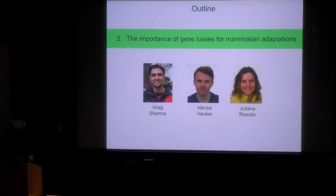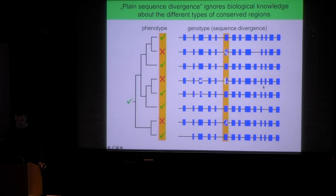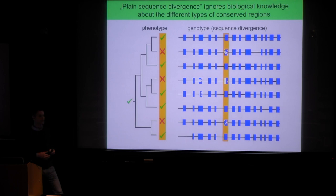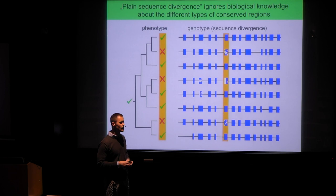In the second part, I'd like to talk about losing genes and some very exciting aspects we discovered. This is the work of Virak Sharma, Nicola Hecker, and Giuliano Rossito. The forward genomics framework measures sequence divergence and treats genes and regulatory elements in the same unbiased way, but ignores biological knowledge about the different types of genomic elements.